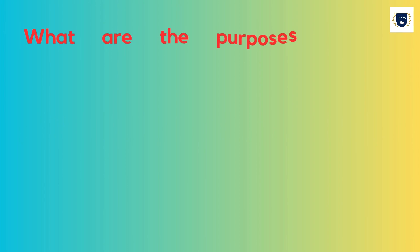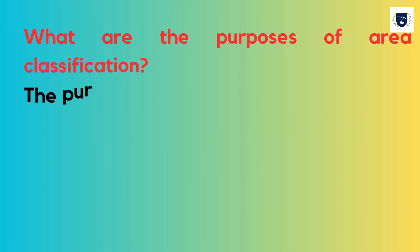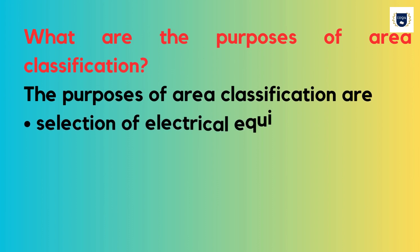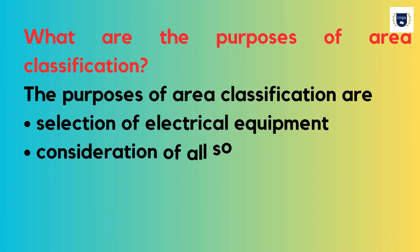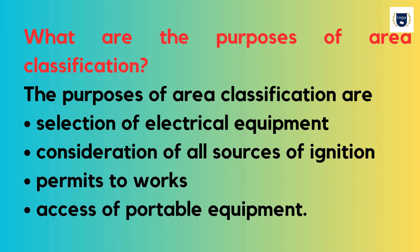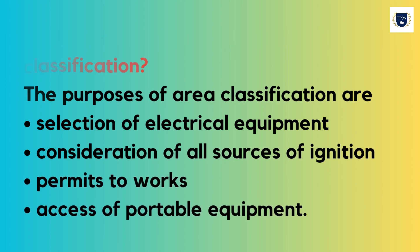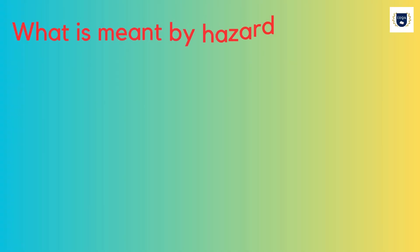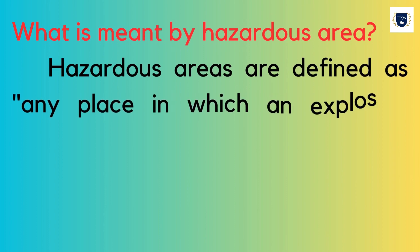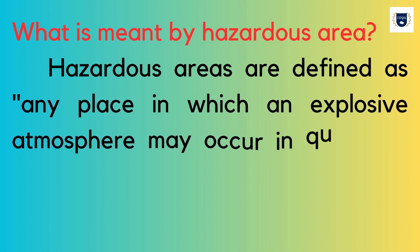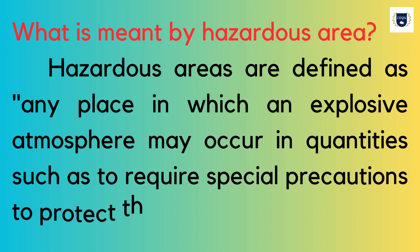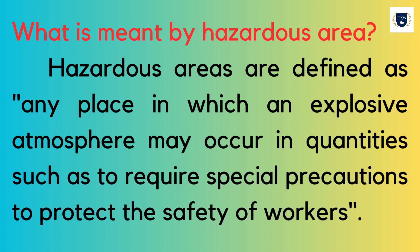What are the purposes of area classification? The purposes of area classification relate to identifying hazardous areas. Hazardous areas are defined as any place in which an explosive atmosphere may occur in quantities such as to require special precautions to protect the safety of workers.